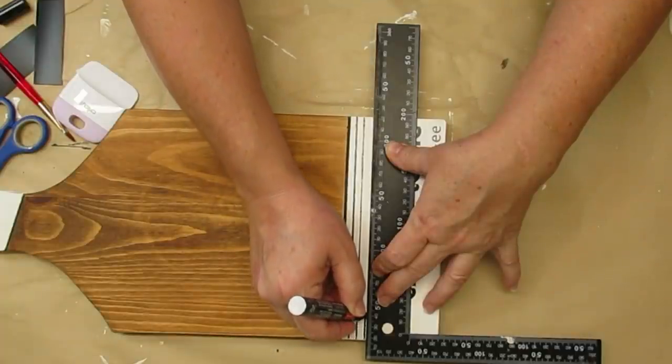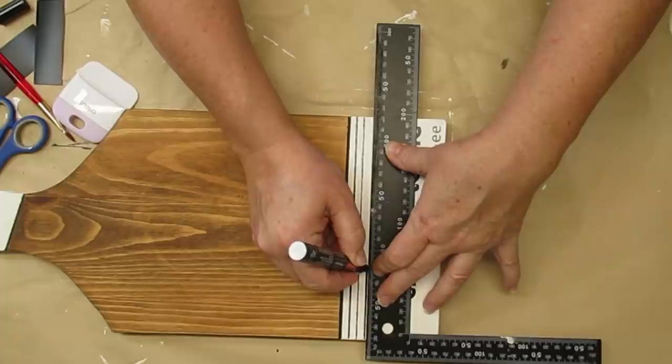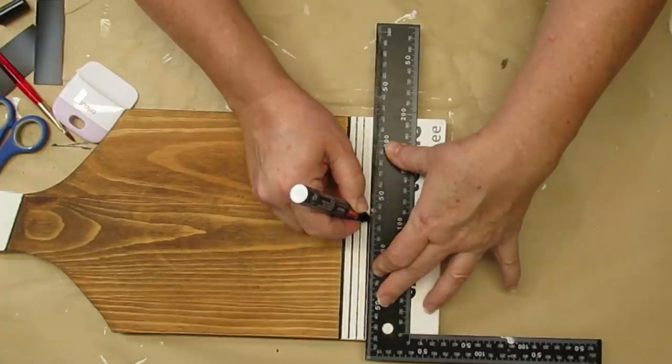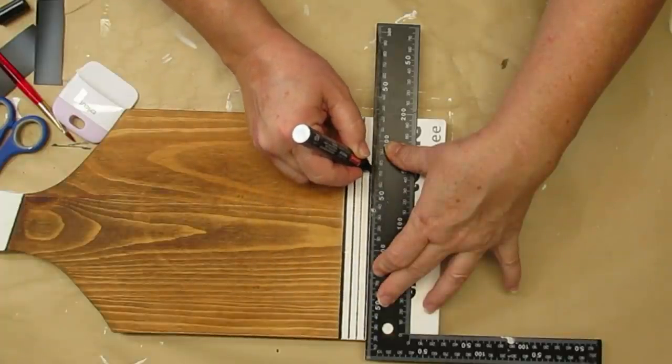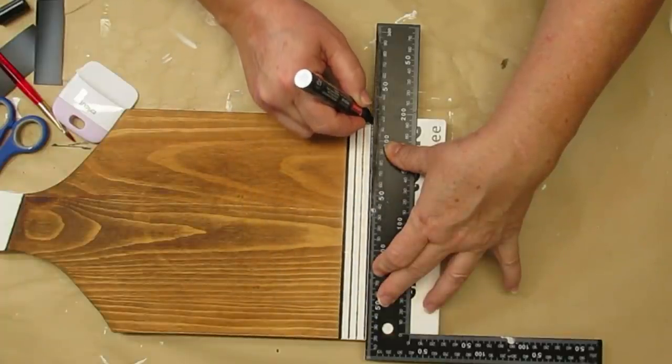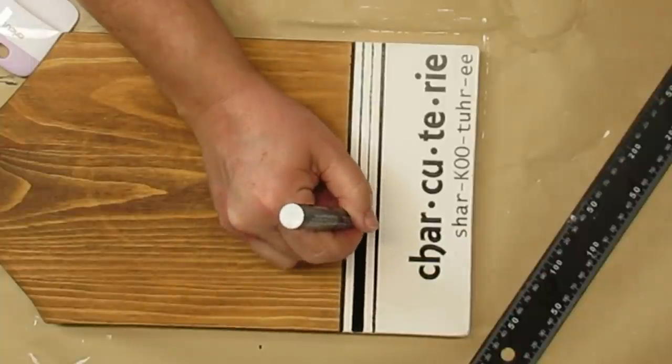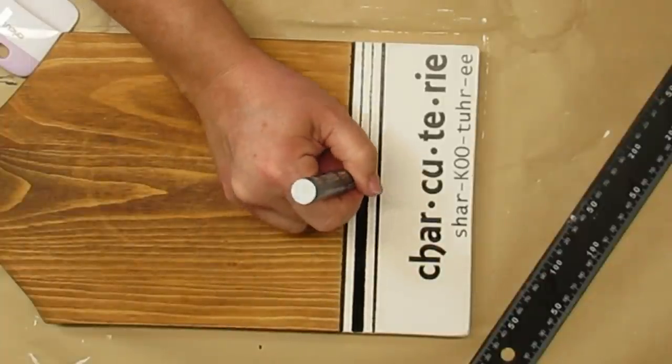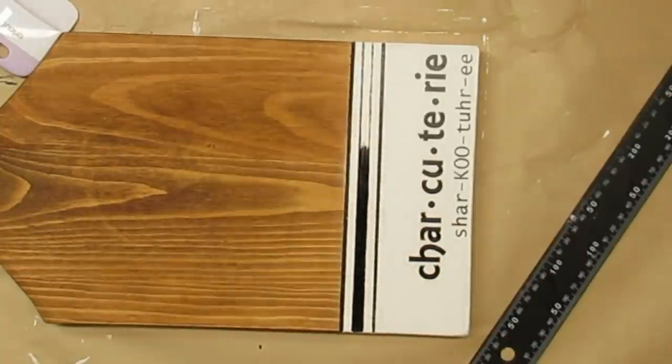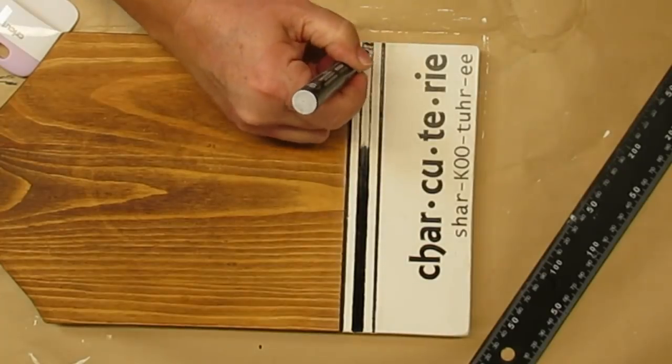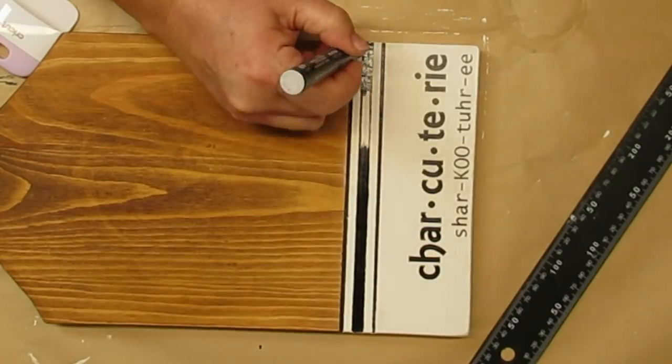The other thing I added was a label using my Cricut. I typed out the word charcuterie and with the pronunciation underneath it which I thought was kind of fun. This turned out really nice. I'll probably use it to serve some hors d'oeuvres or things like that making sure I put some paper down first.